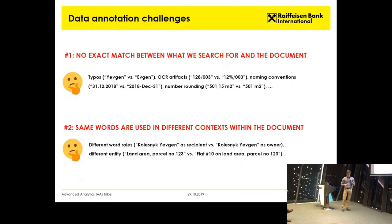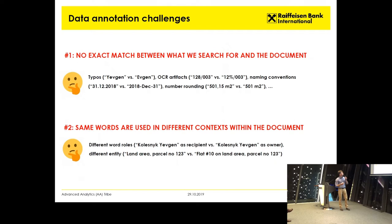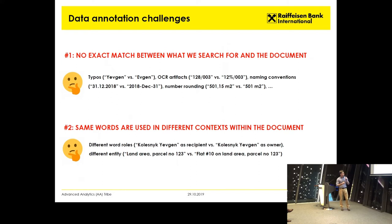The next step represents the challenge. Suppose we cleaned and recognized the data — now we have to prepare our training dataset to feed into the algorithm. We have two big challenges. One challenge is that we don't have an exact match between what we have and what we want to search for, because it could be a typo in the document or in the database. For example, someone could have typed 'Yevgen' versus 'Yevgen' differently, or Tesseract did a poor job recognizing a percentage sign. There could also be different naming conventions for dates or numbers.